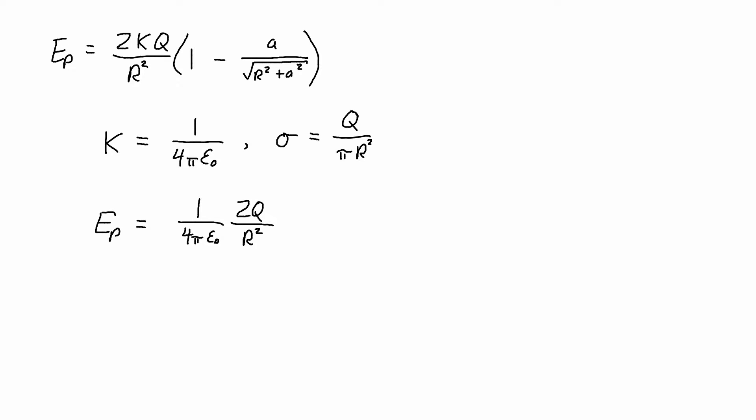So first I substitute in k. And then I rearrange it to collect 2 over 4 epsilon 0, and then q over pi r squared as two separate terms. And then notice that q over pi r squared is equal to sigma, and 2 over 4 simplifies down to 1 half.